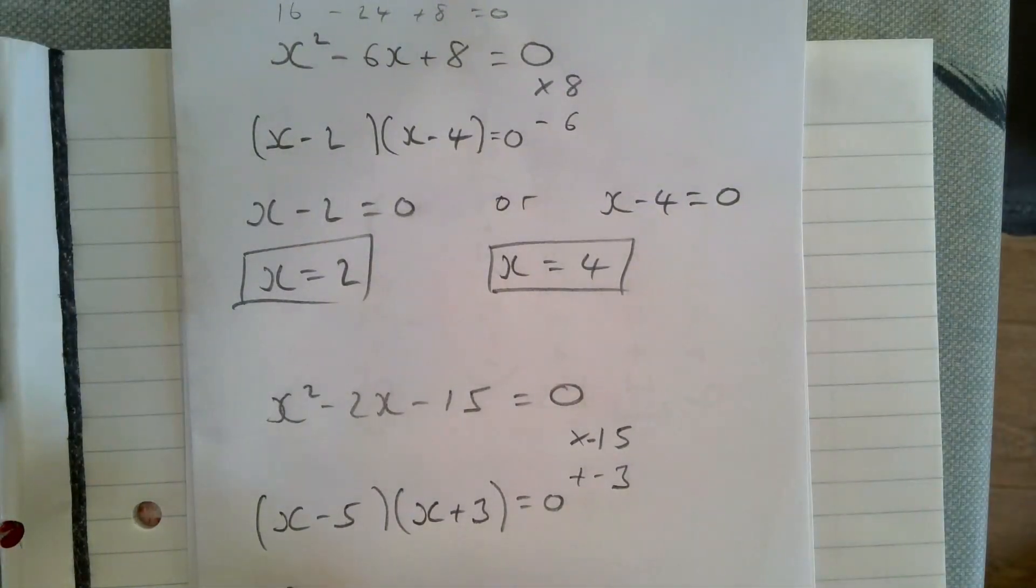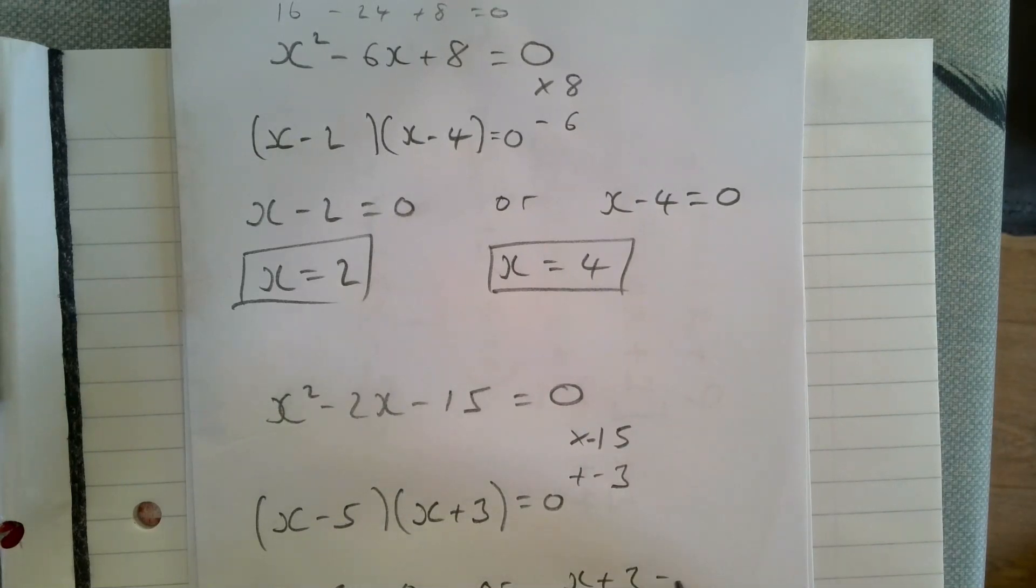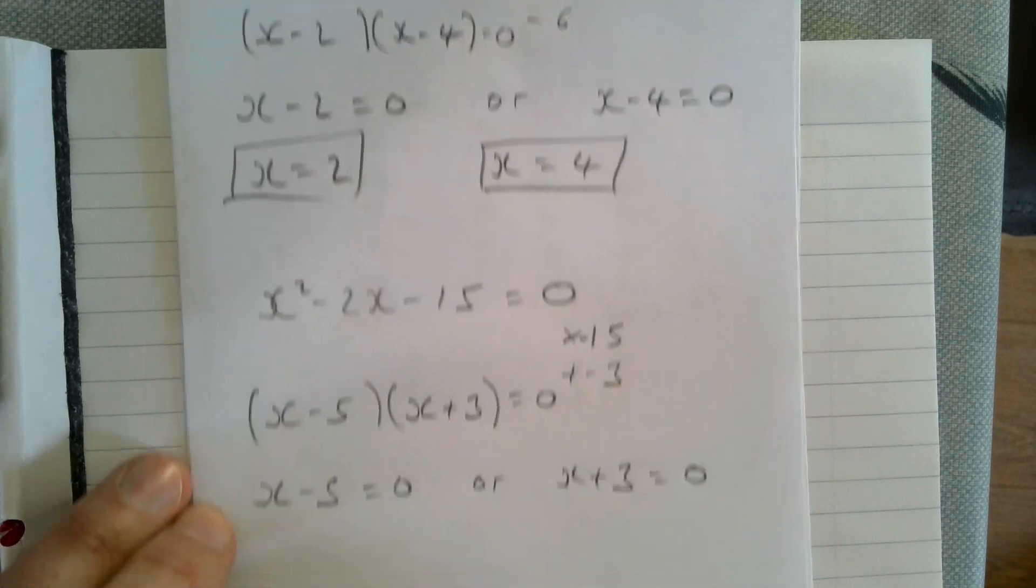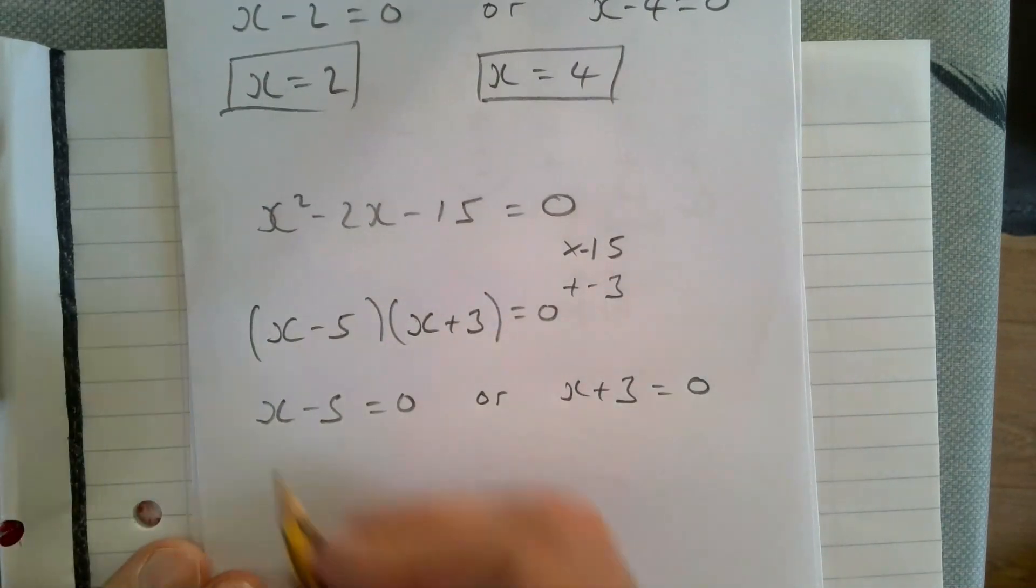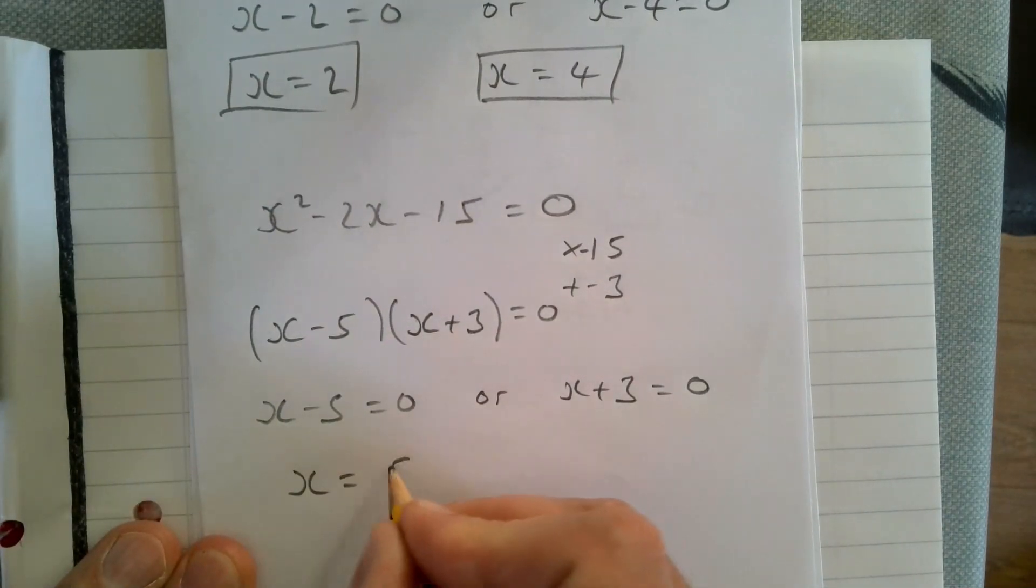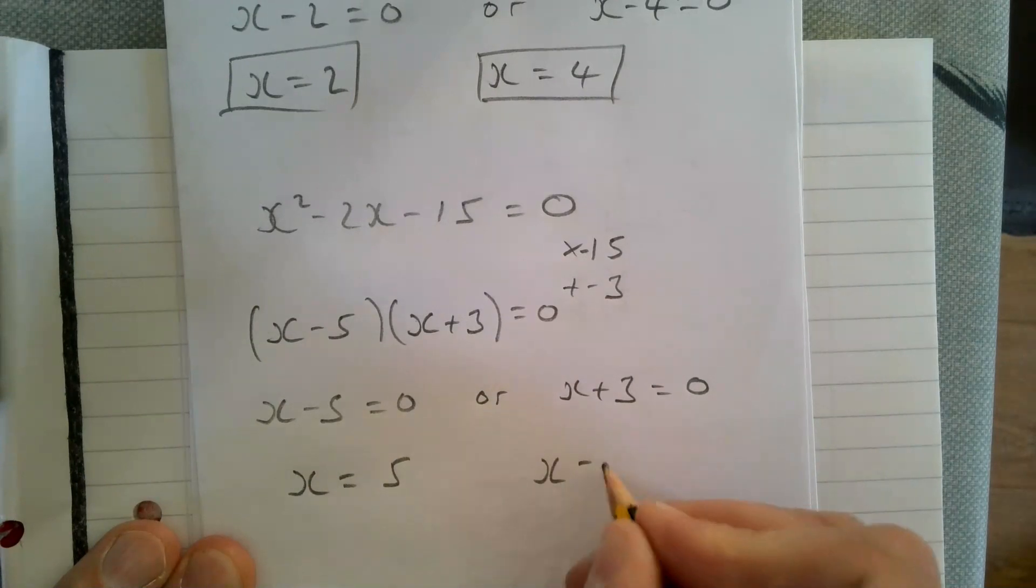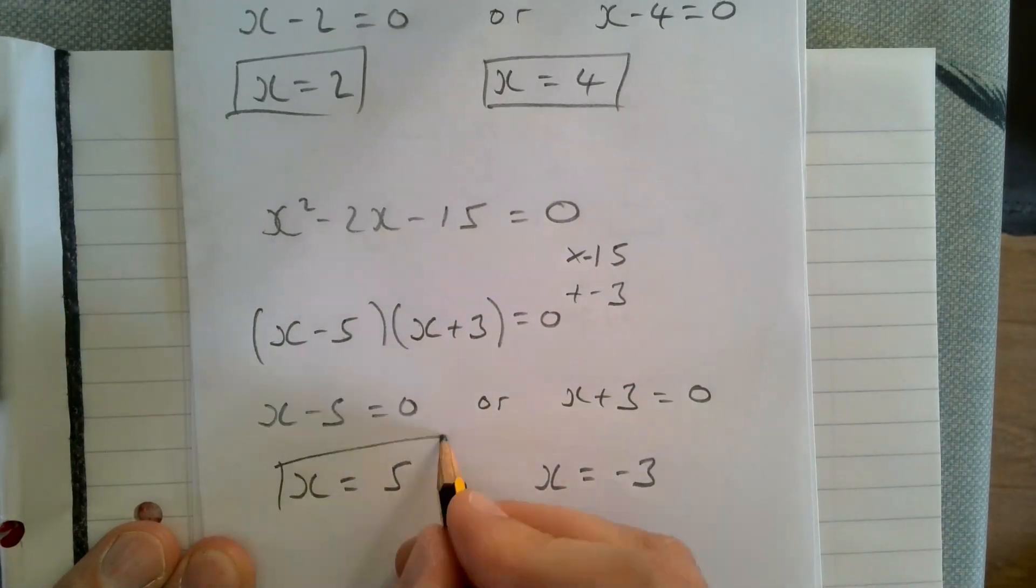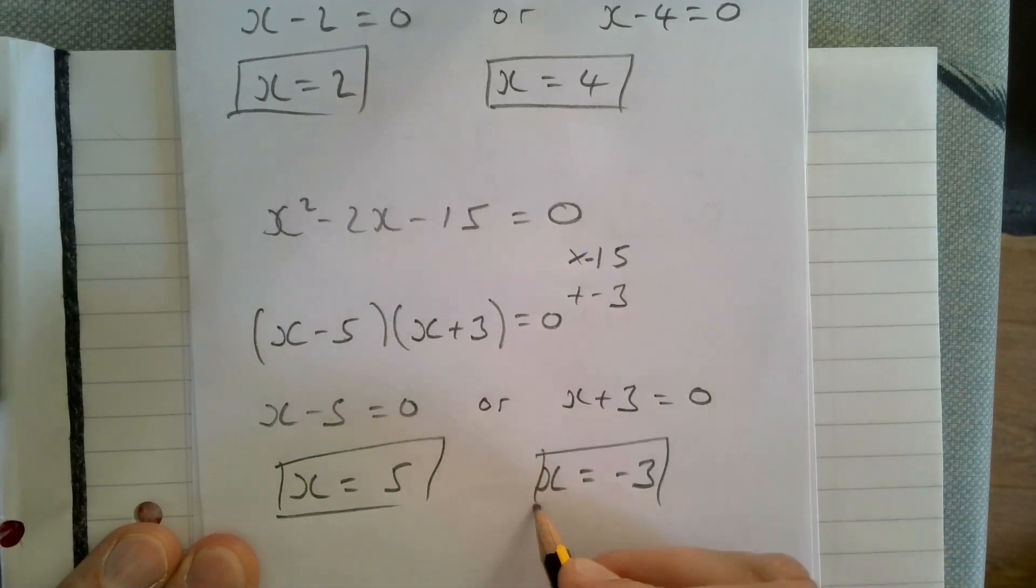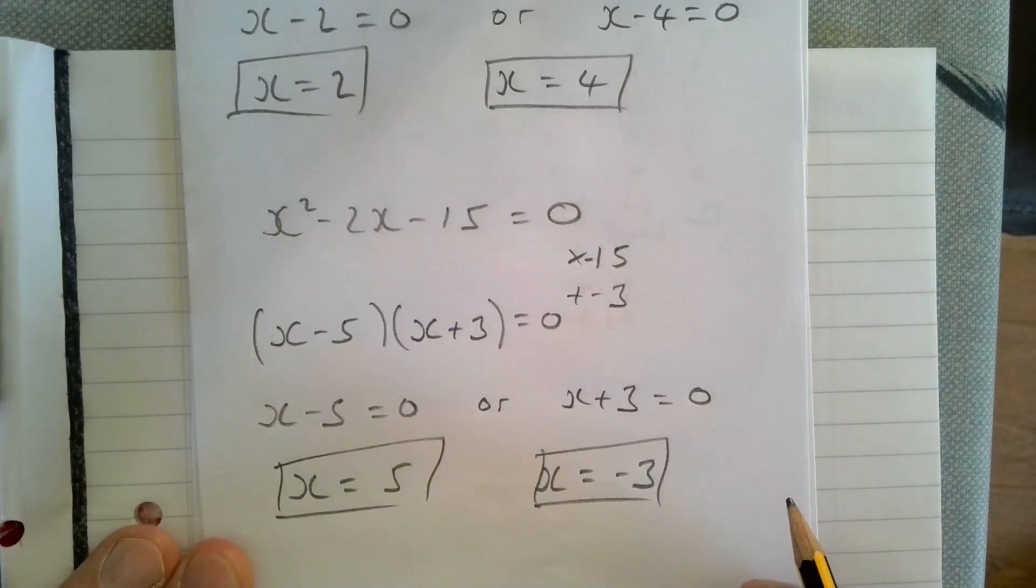That means either x minus five equals zero, or x plus three equals zero. So x equals five or x equals minus three. Those are the only two numbers in the entire world that will make this equation work.